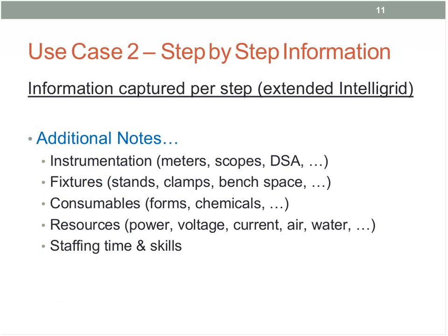In addition to the standard IntelliGrid columns, we pad out the step-by-step with extra pieces of information critical to laboratory design. These include any instrumentation needed in the step — meters, scopes, measuring devices, power supplies, signal generators, and any fixtures like stands, clamps, or bench space. We also capture consumables such as forms, chemicals, or packaging materials. Resources include the supply of voltage and current, compressed air, cooling water, or any other resource that must be part of the test bed. Finally, we capture staffing time and the skills our staff should have.